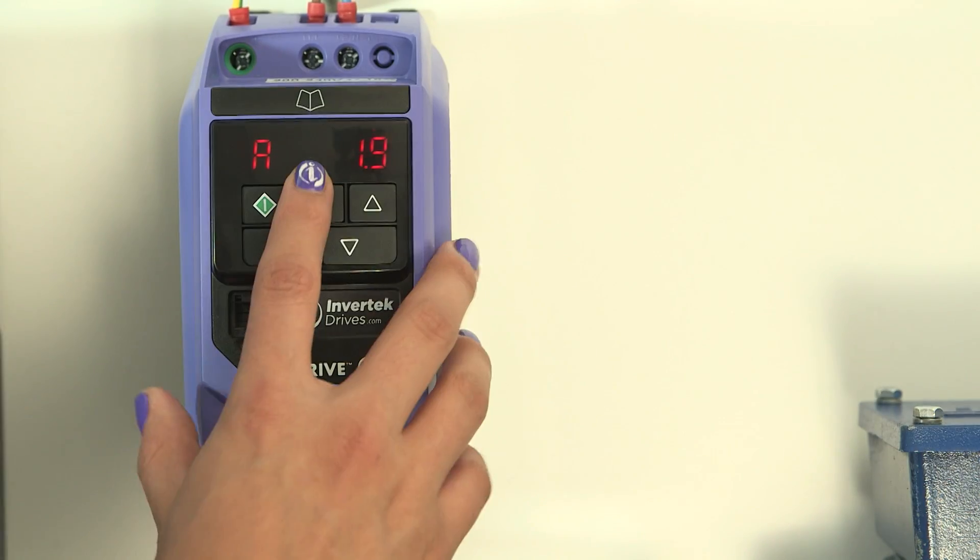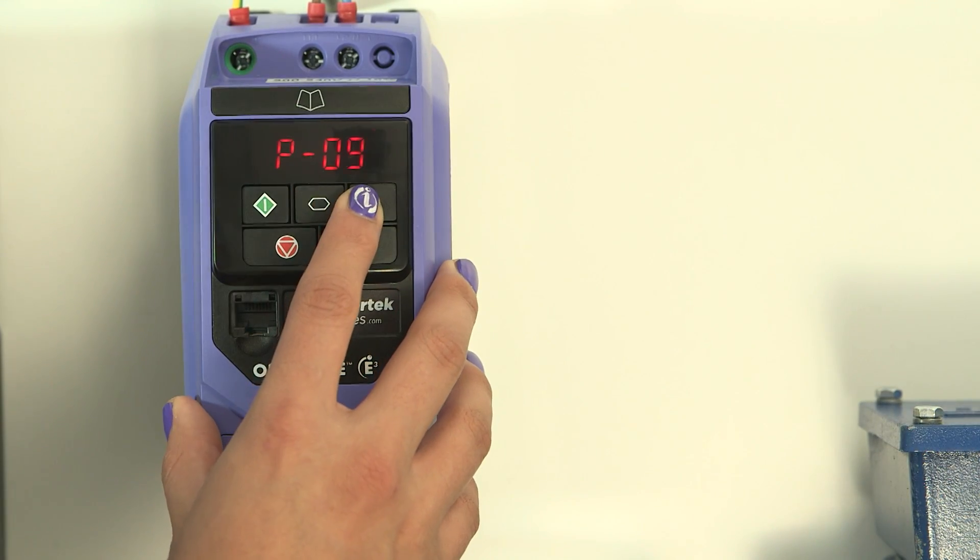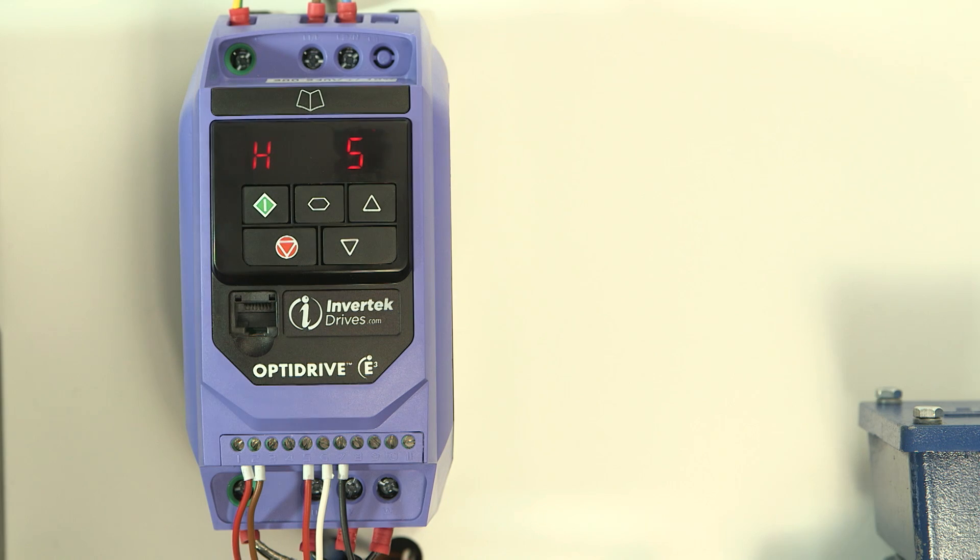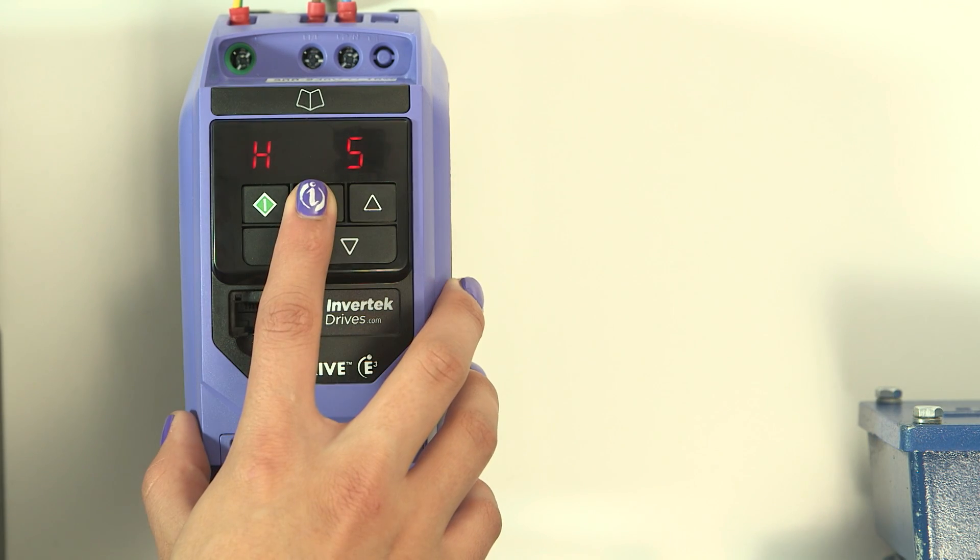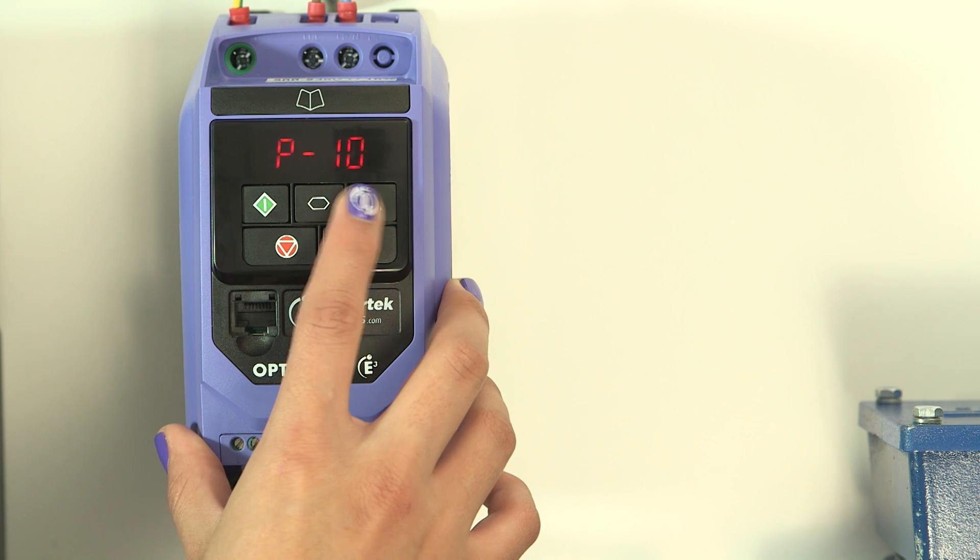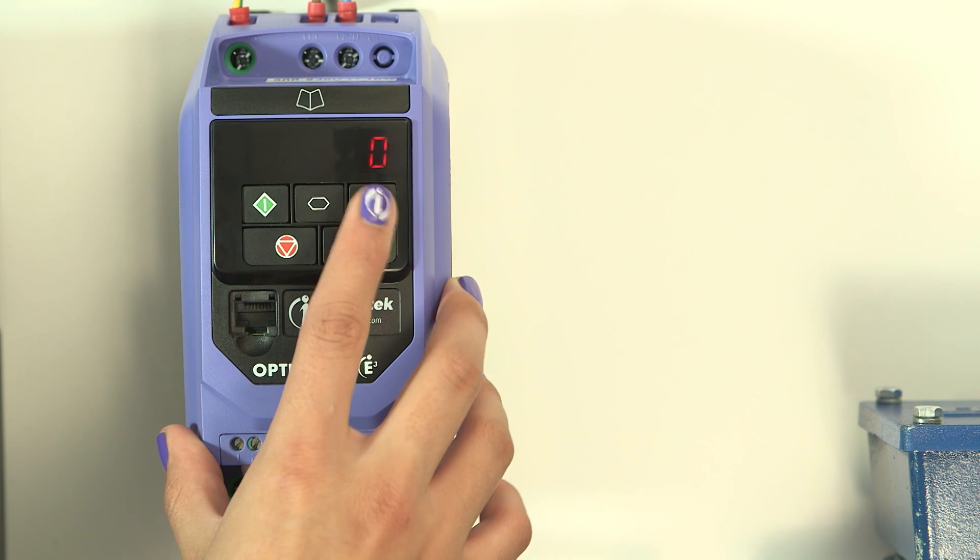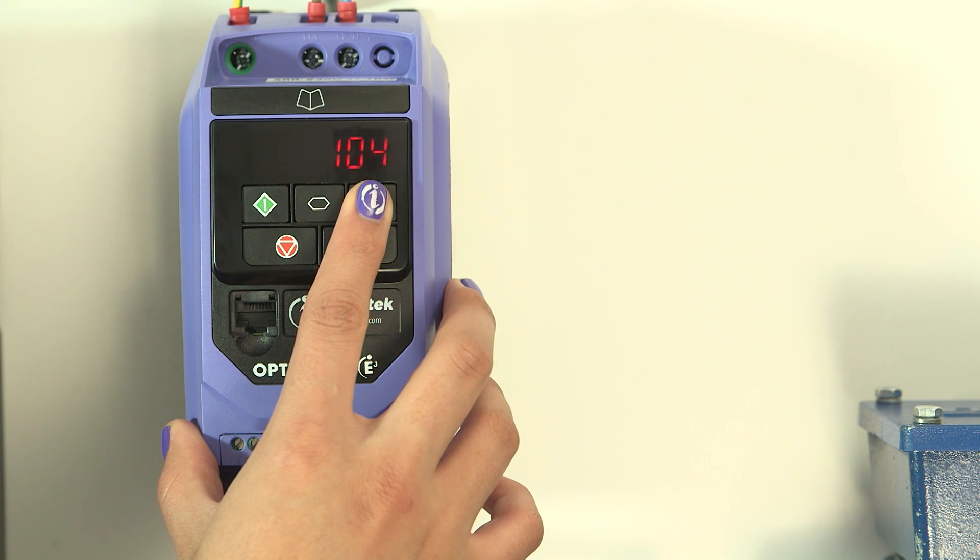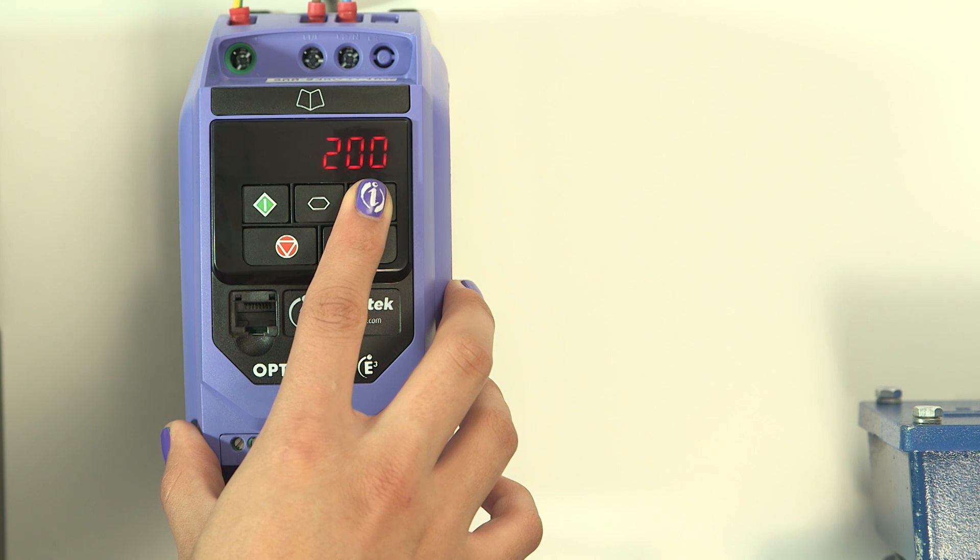Press navigate and scroll to parameter 9 which is the motor frequency. This already matches the motor so we don't change it. Now go to parameter 10 which is the motor RPM. If I change this from 0, the main effect is to change the display to RPM. I will set it to what's on the motor rating plate, 1400.